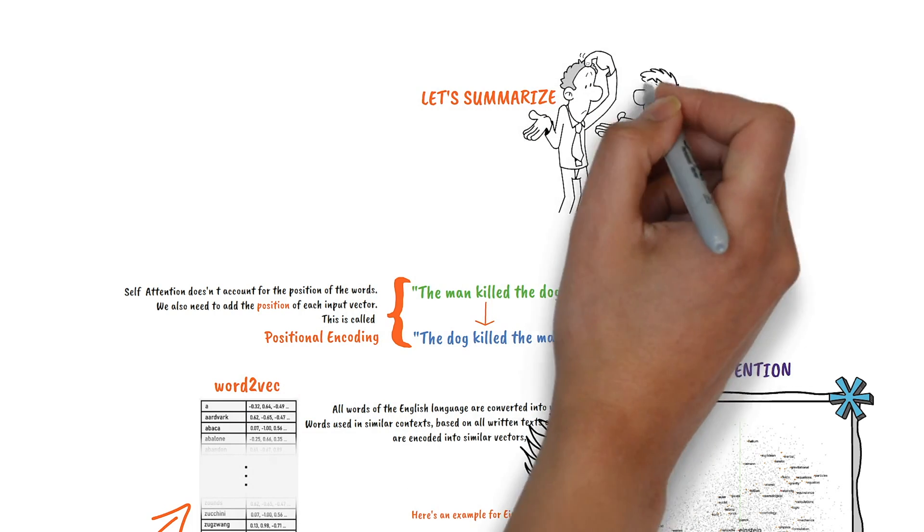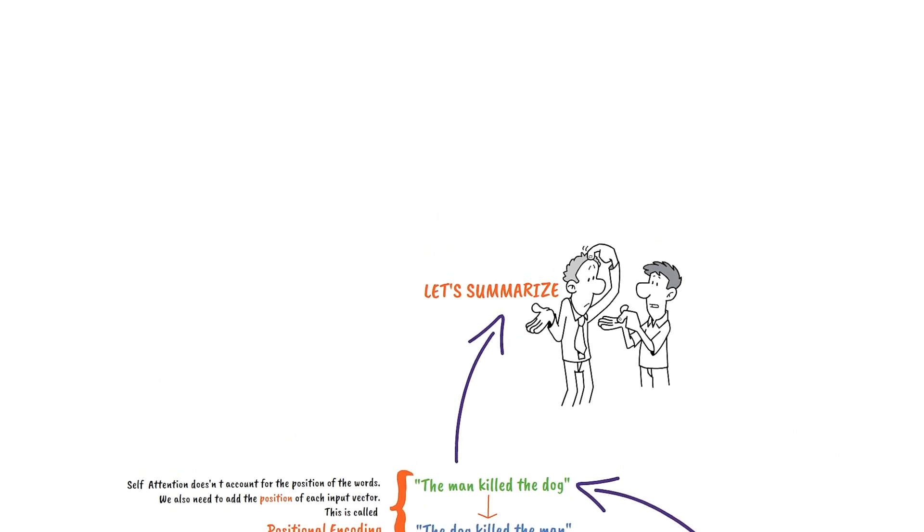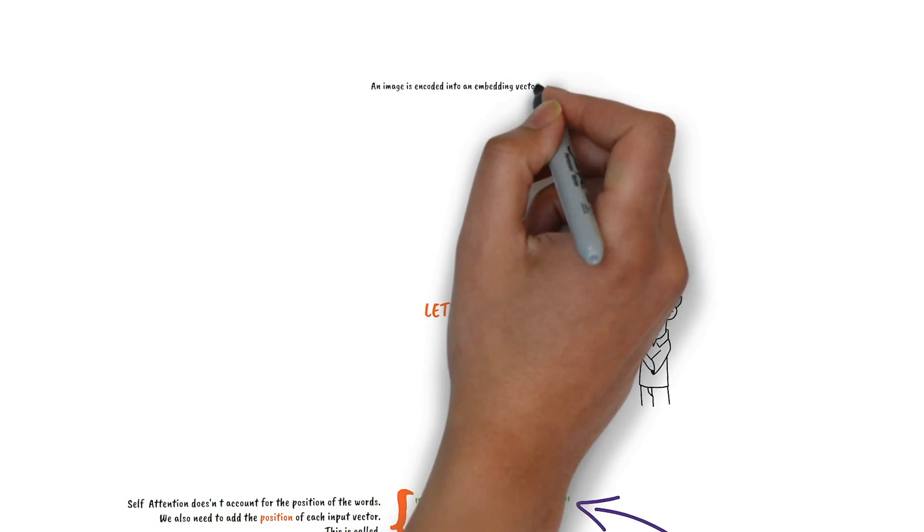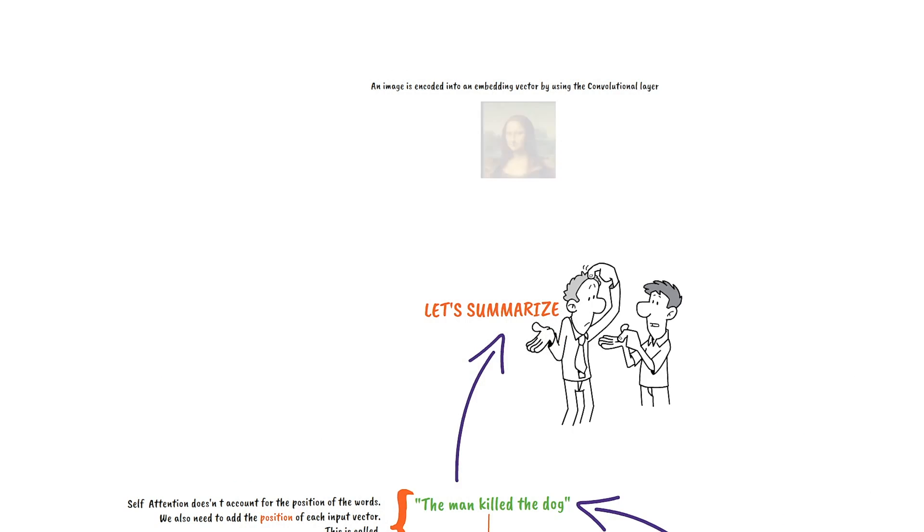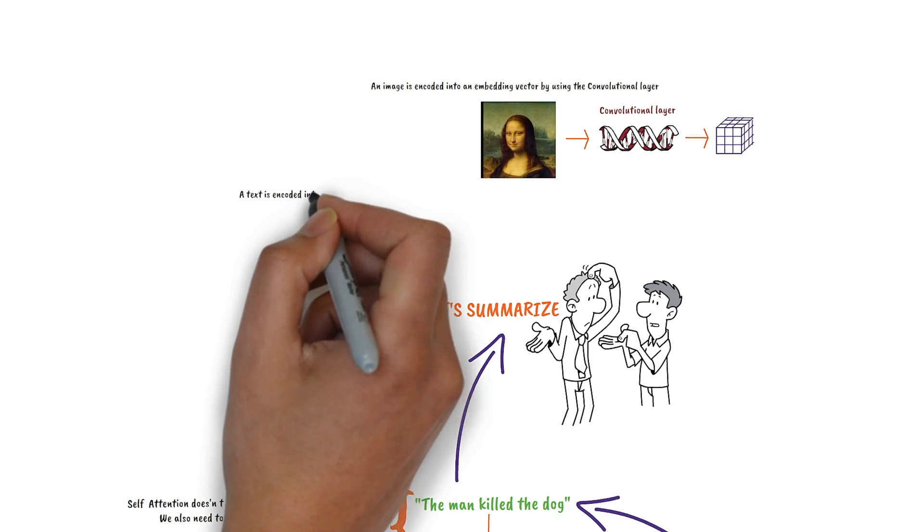Now let's summarize. An image is encoded to a vector by the convolutional layer. For text we do the same with the self-attention layer.